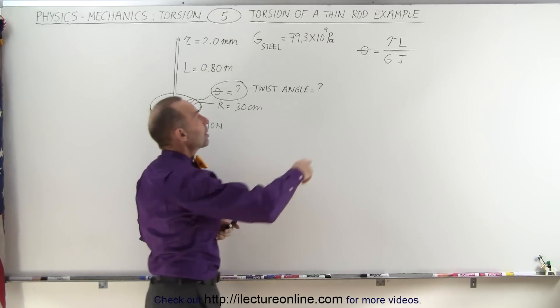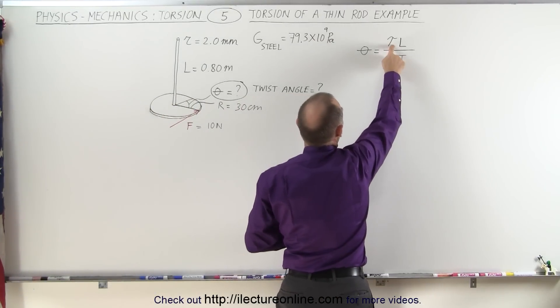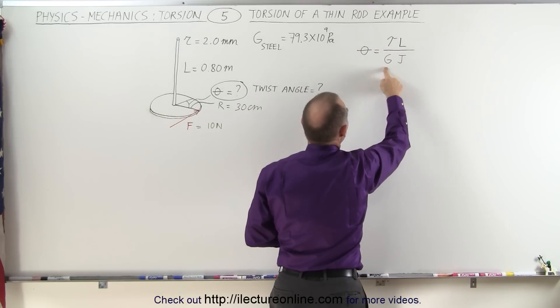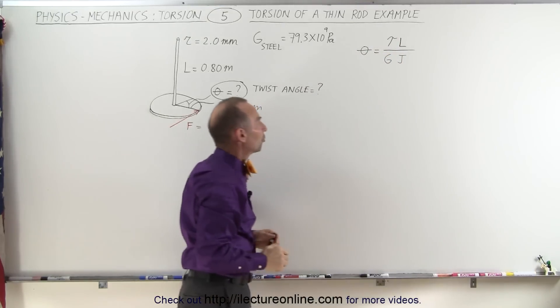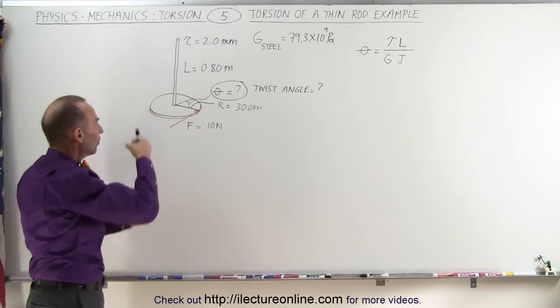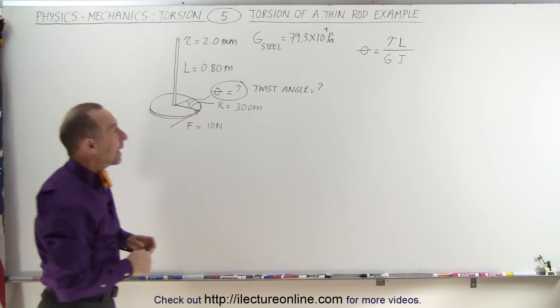The equation that we use here: the twist angle can be calculated by multiplying the torque times the length and dividing it by the modulus of rigidity and the torsional constant J. Now we're going to use a torsional constant for a circular rod.